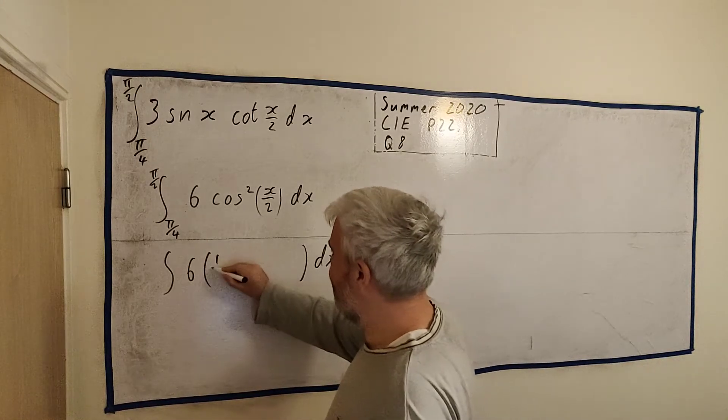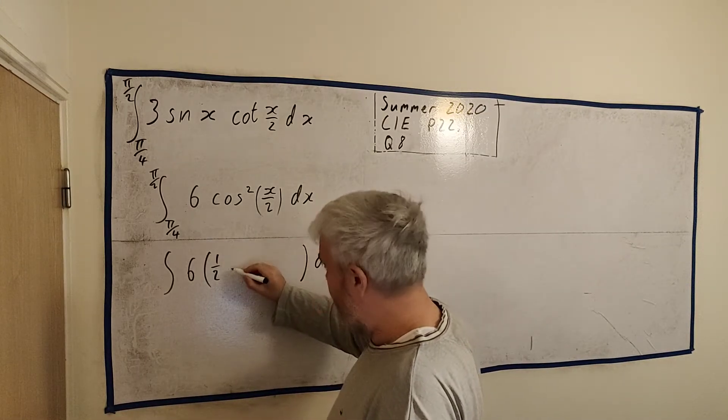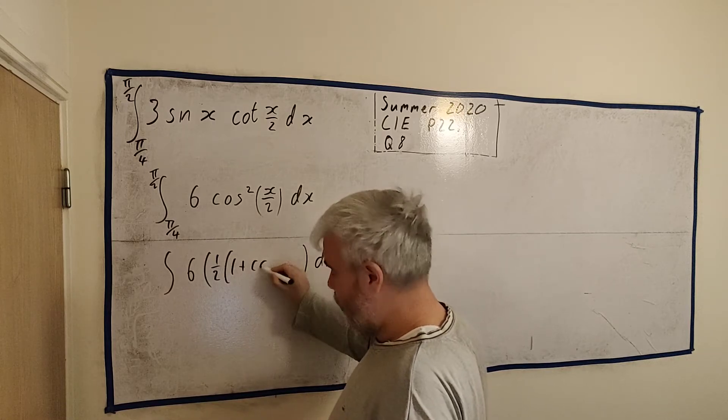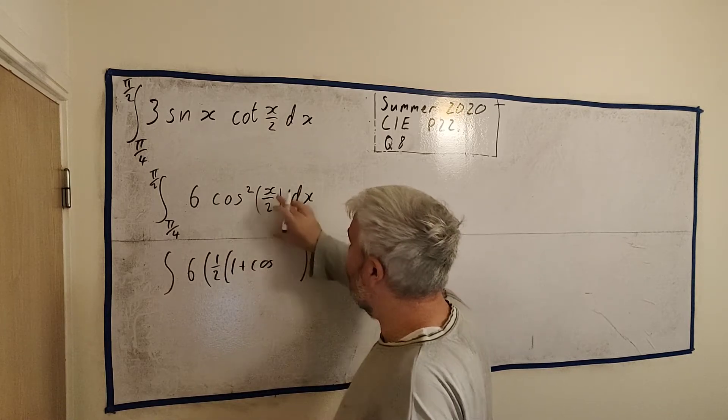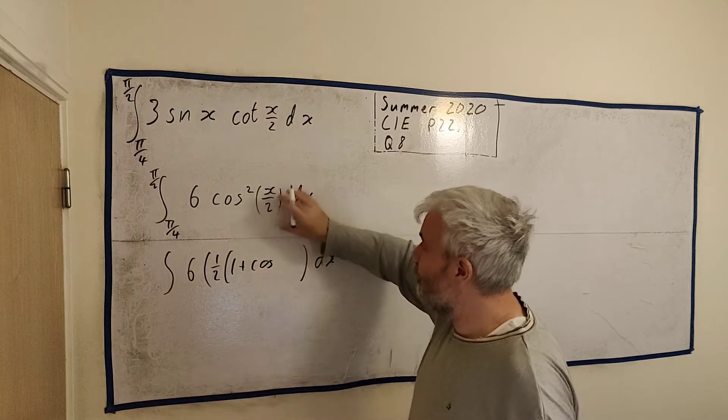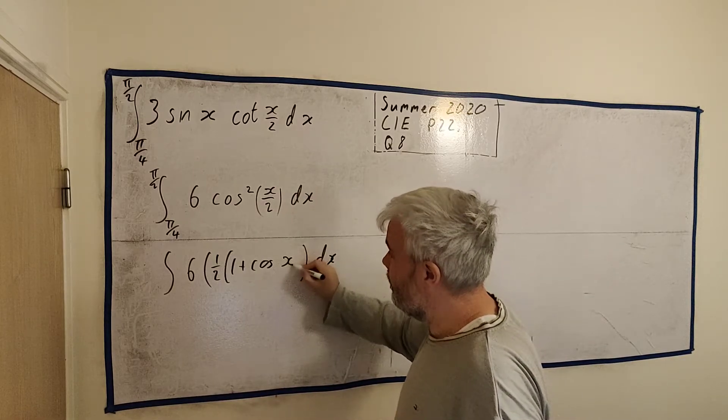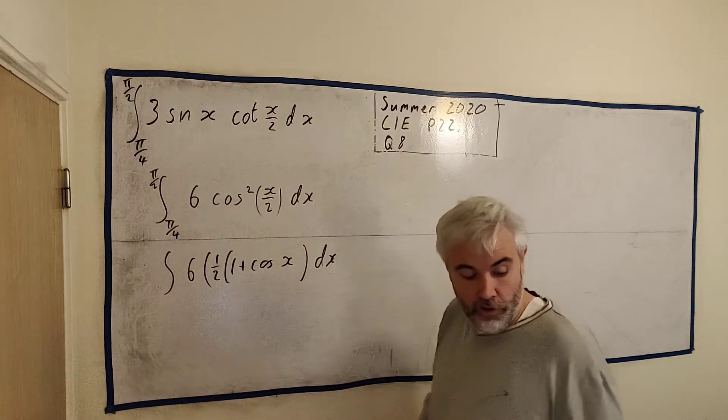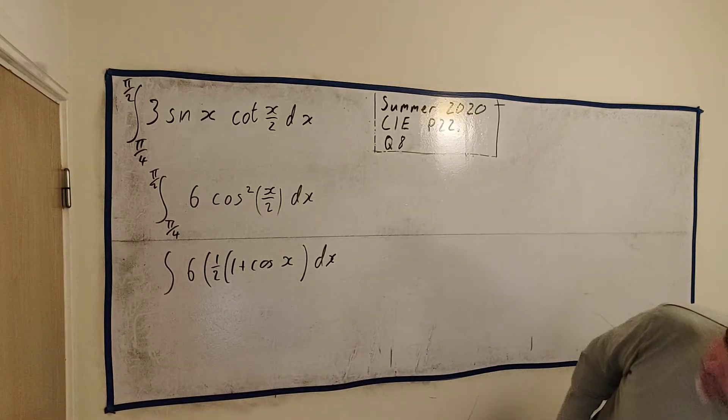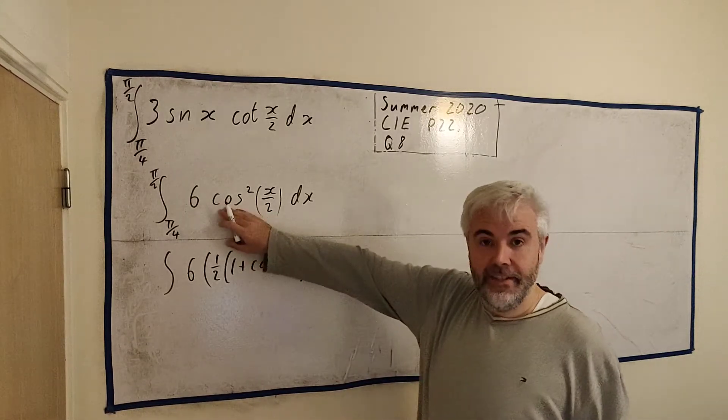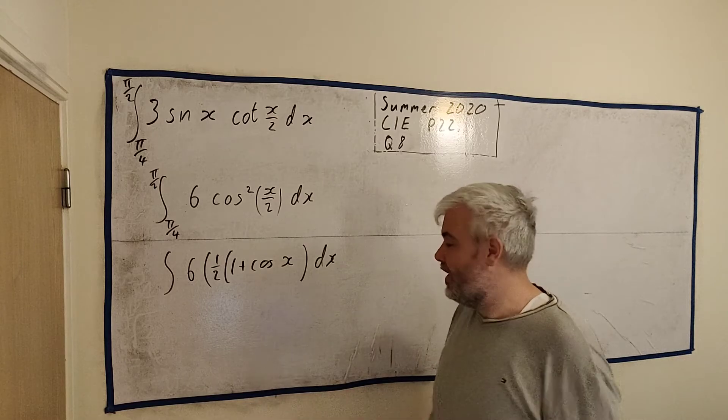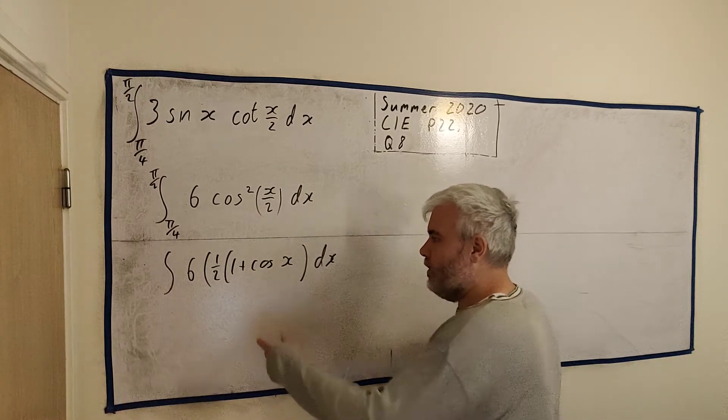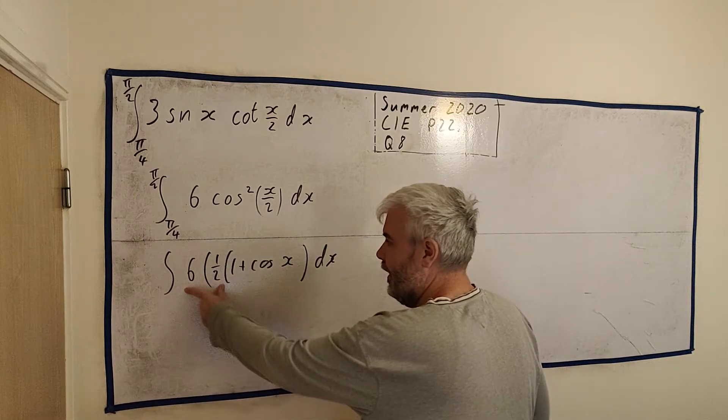So, let me just check my notes here. Cosine squared is the same as a half, 1 plus cosine 2 times this. Now, 2 times this is just x. 2 times x over 2 is just x. So, this is actually the same as this. And you'll see it comes out quite easily after that.